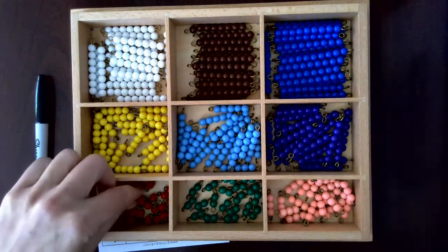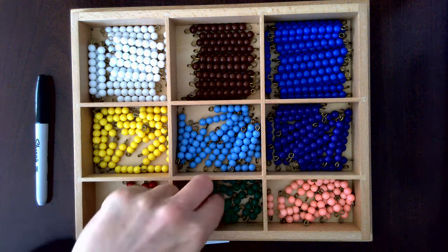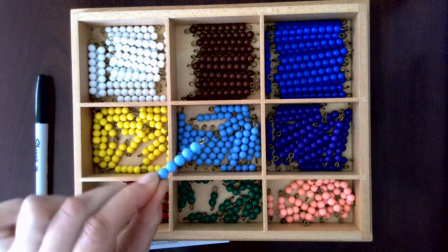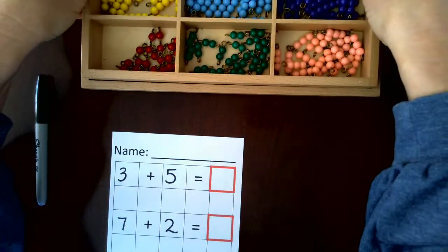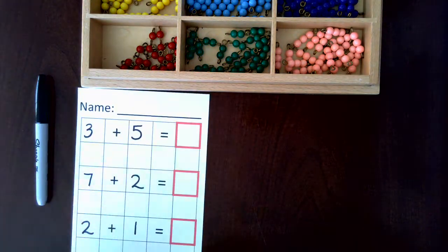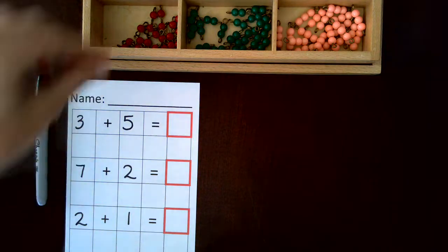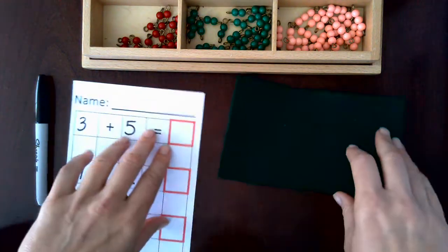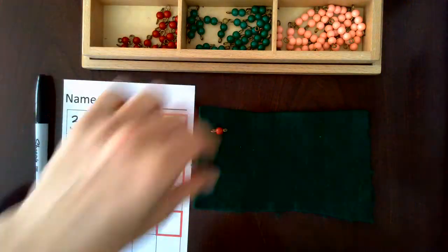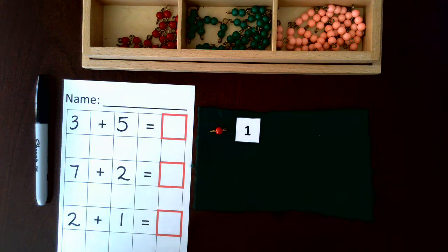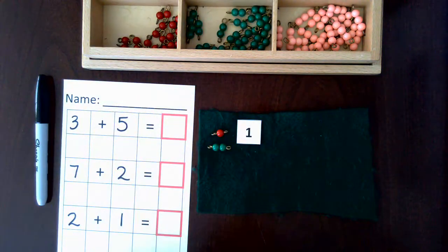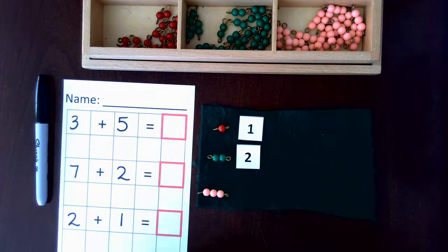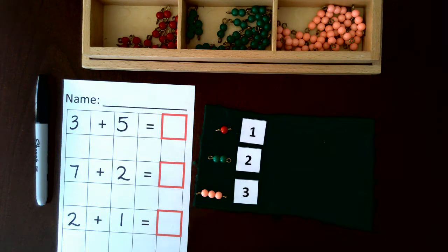With the colored bead bars, each quantity is always the same color and they're fixed together. Now if this is the first time the child has used these bead bars, you'll want to introduce each quantity. I usually like to use a piece of felt so they don't roll away. You can have the child match the bead with a number card.